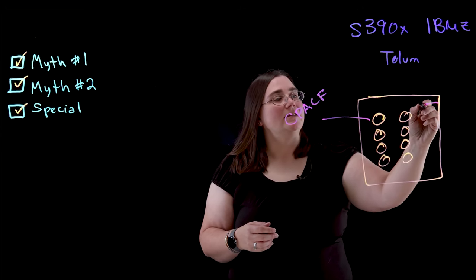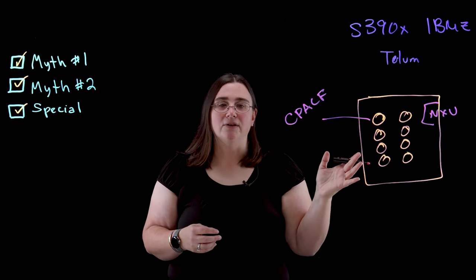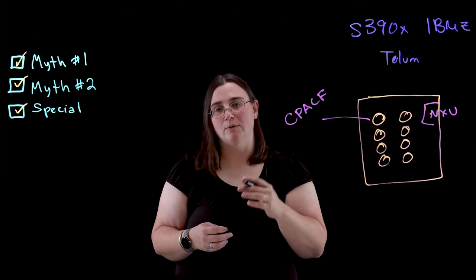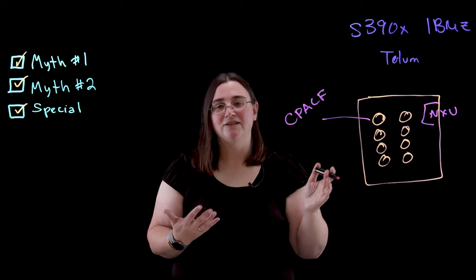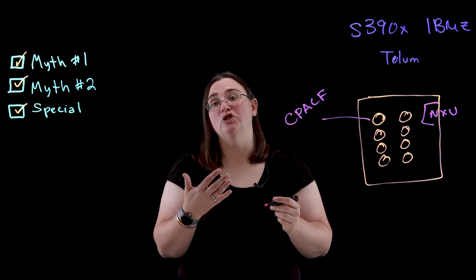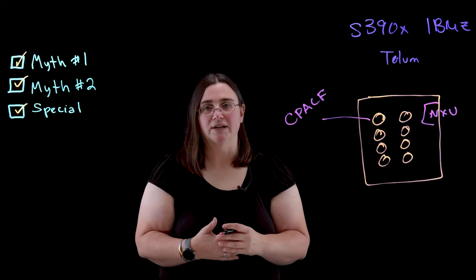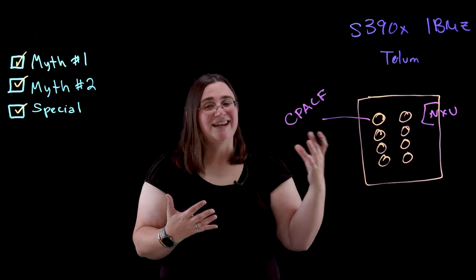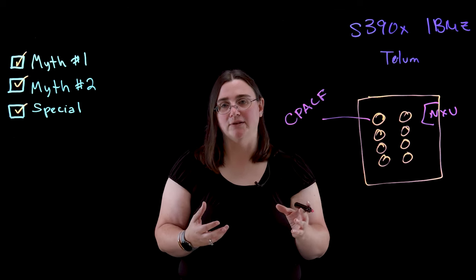The next one I wanted to mention was the NXU, and that is the nested accelerator unit. And that allows you to do the compression and decompression, again, on the hardware itself. In Linux, you'd think about that as something like when you're using gzip in your applications or when you're compressing and decompressing data. And what that does is it takes away from the amount of work that your general processors are doing.